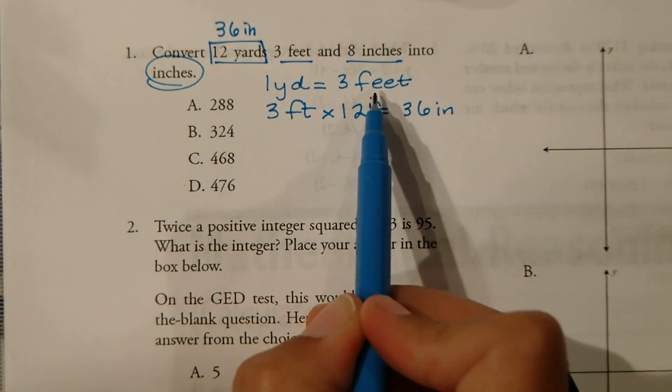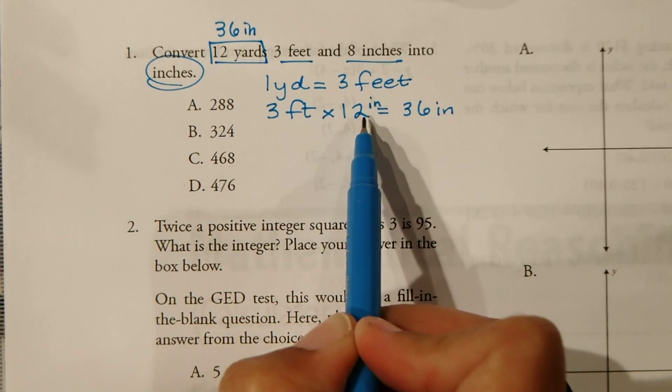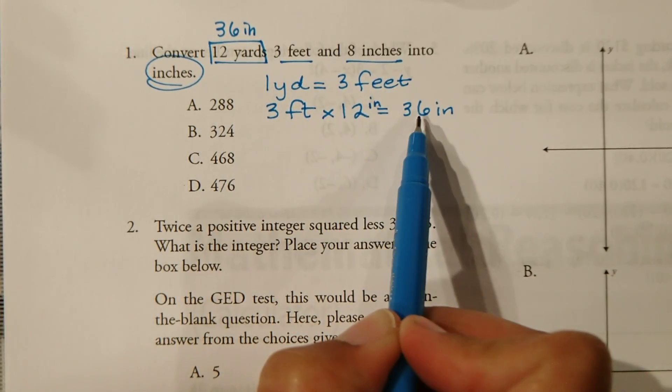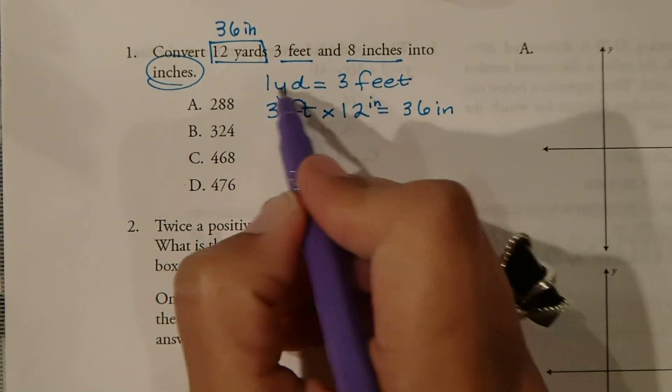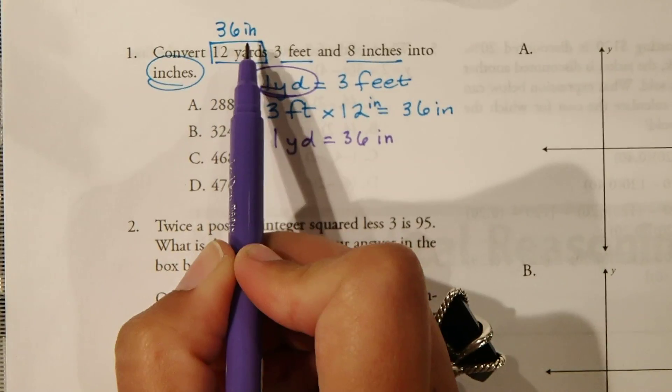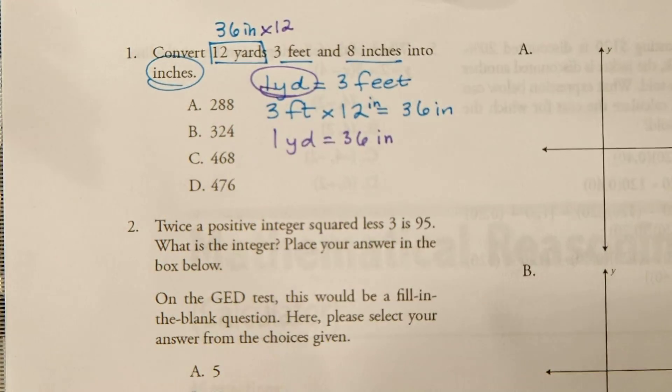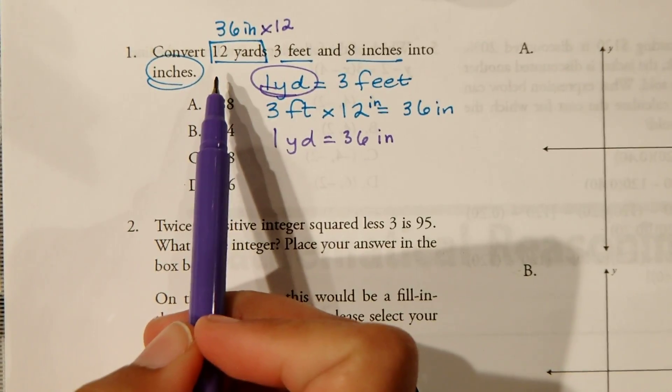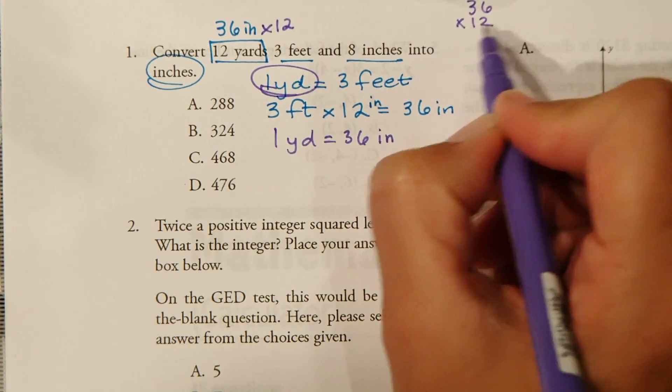Okay, so 1 yard is equivalent to 3 feet, and 3 feet, we're going to convert that into inches. So 3 feet times 12 inches per foot is 36 inches. So we know in each one of these yards, 1 yard is going to equal 36 inches. So we're going to take that and multiply it by 12. So 36 times 12 in order to get the total amount of inches for the 12 yards.